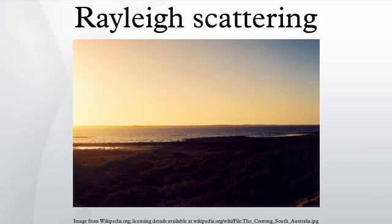Rayleigh scattering, named after the British physicist Lord Rayleigh, is the elastic scattering of light or other electromagnetic radiation by particles much smaller than the wavelength of the light. After Rayleigh scattering, the state of material remains unchanged; hence Rayleigh scattering is also said to be a parametric process.